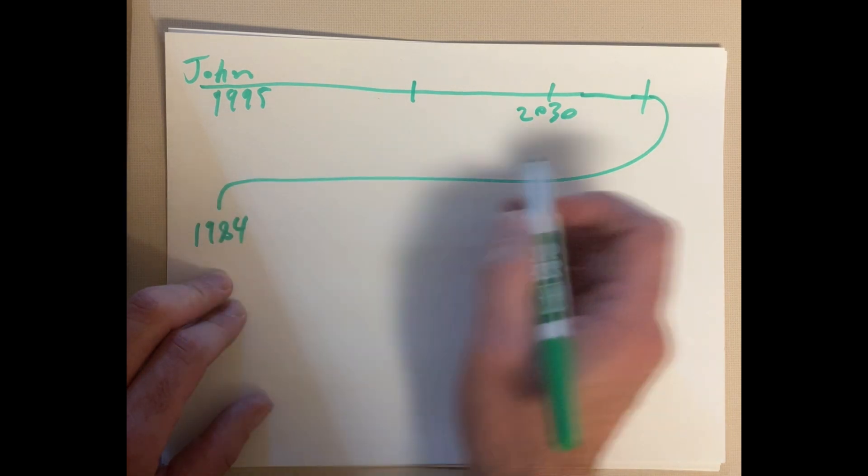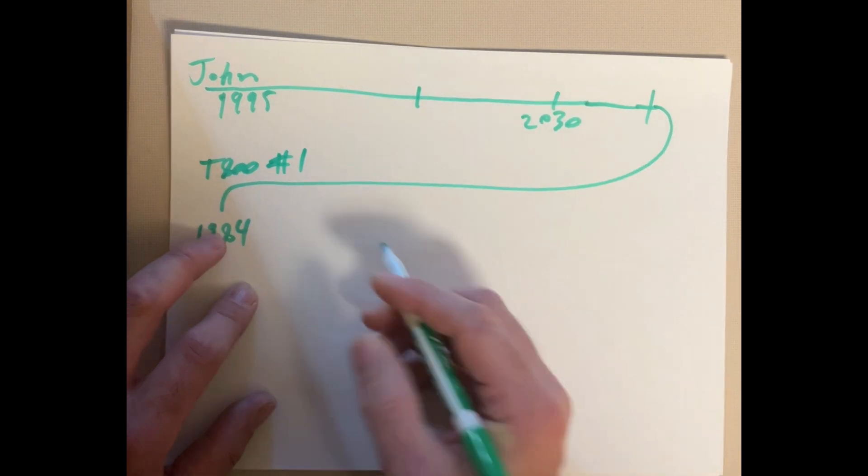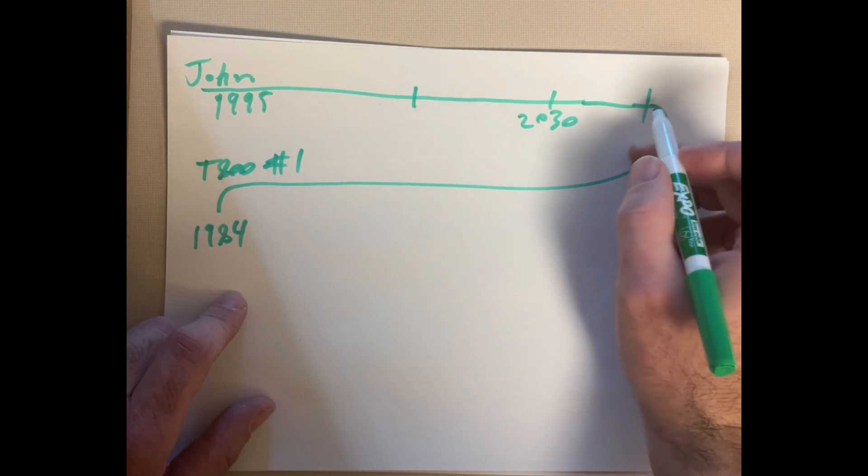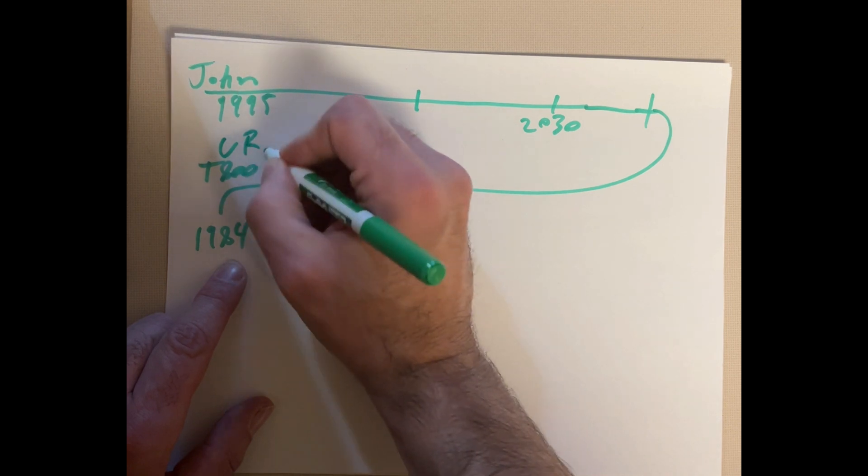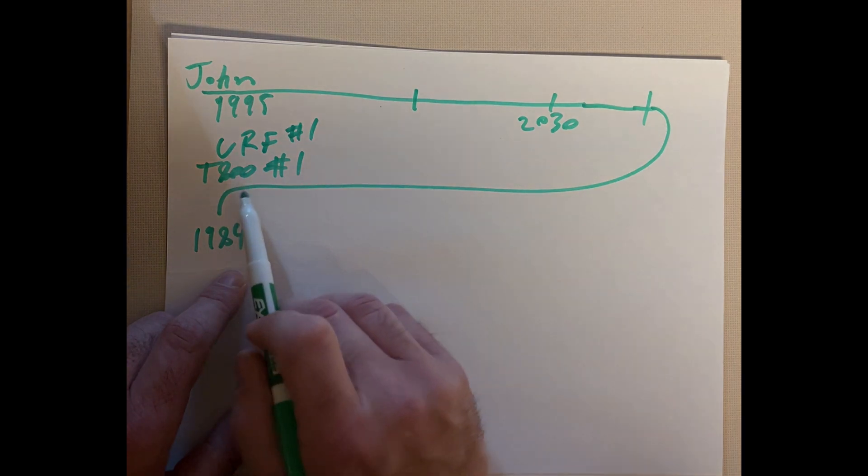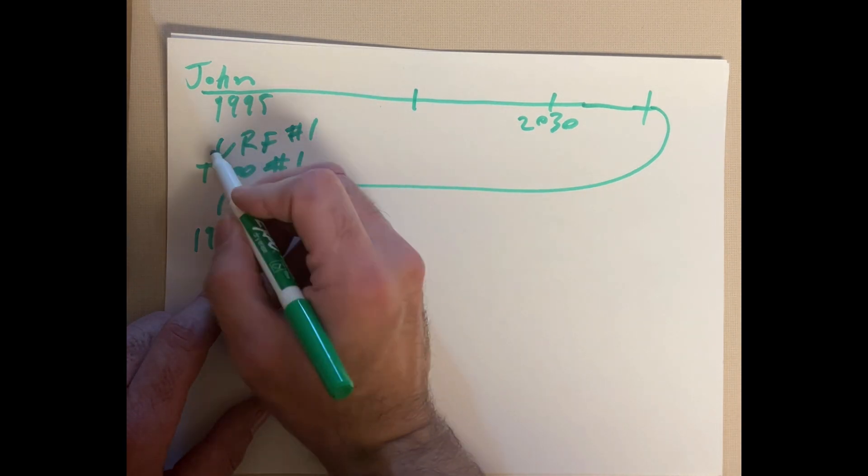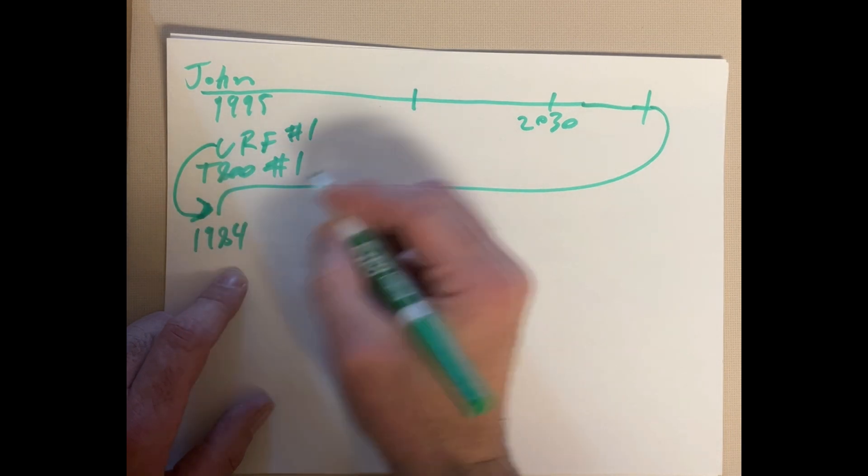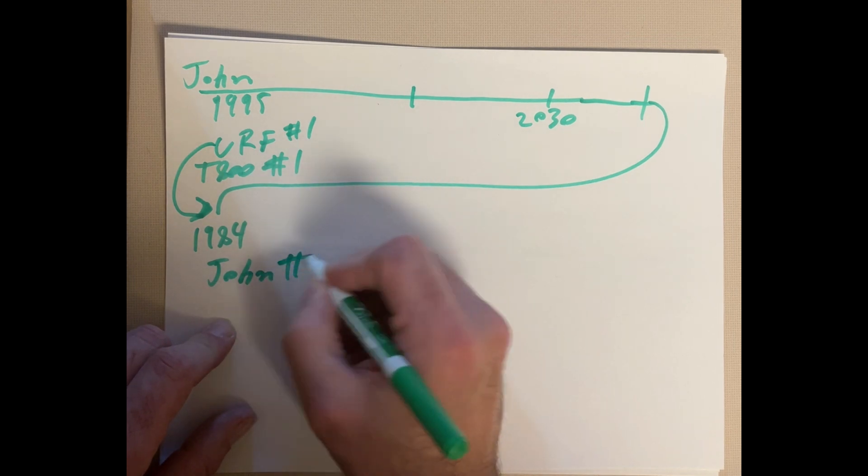So, they send back a T-800. So, this is T-800 number one. And the Resistance sends back an Unknown Resistance Fighter number one to fight off the T-800. So, Unknown Resistance Fighter number one gets Sarah pregnant here. And here we create John number two.